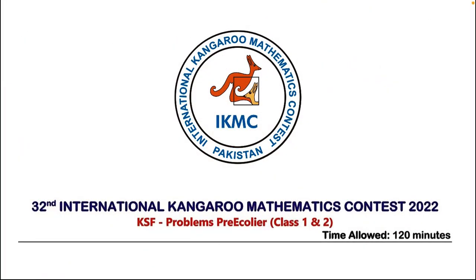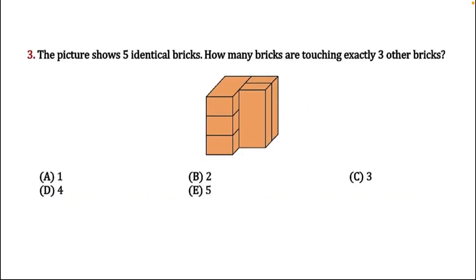This is IKMC — International Kangaroo Mathematics Contest — and we are solving questions for pre-ecolier, class 1 and 2, from the latest 2022 paper. Question number three: the picture shows five identical bricks. How many bricks are touching exactly three other bricks? The options at the bottom are: A is one, B is two, C is three, D is four, and E is five.